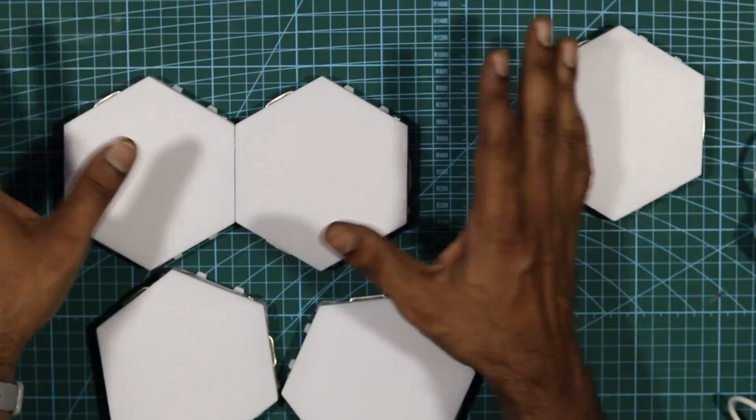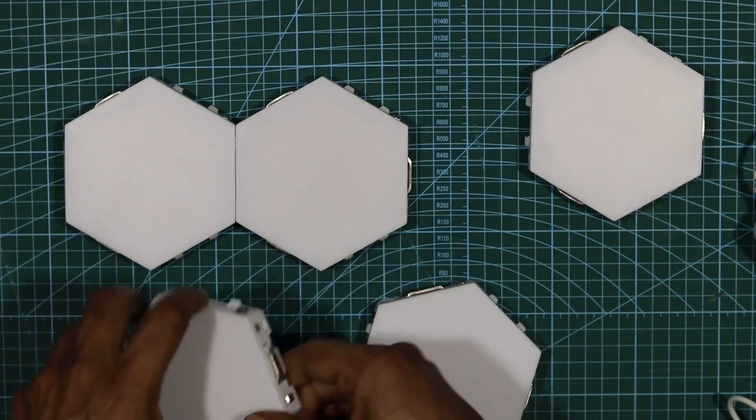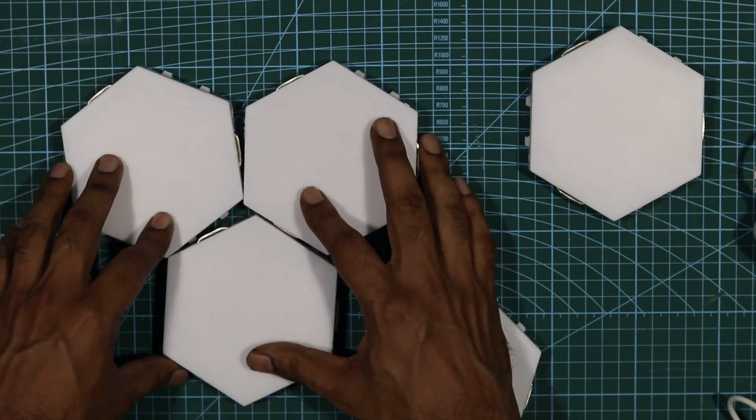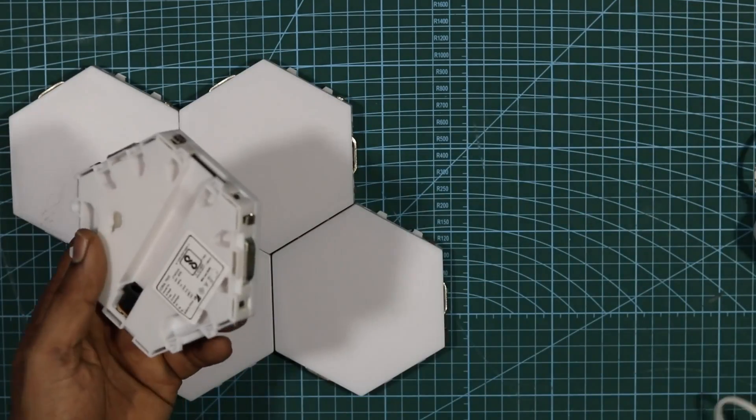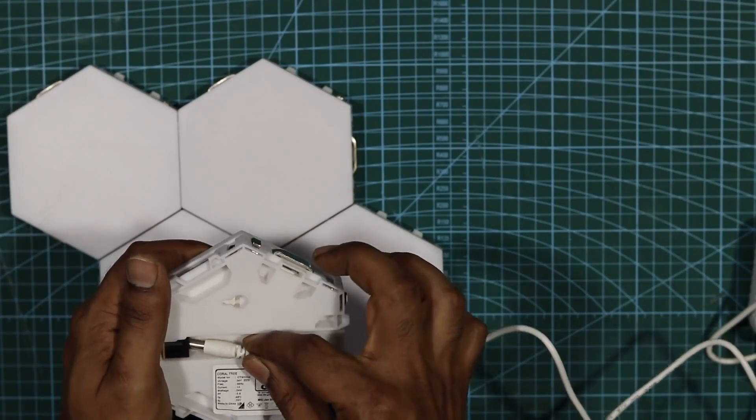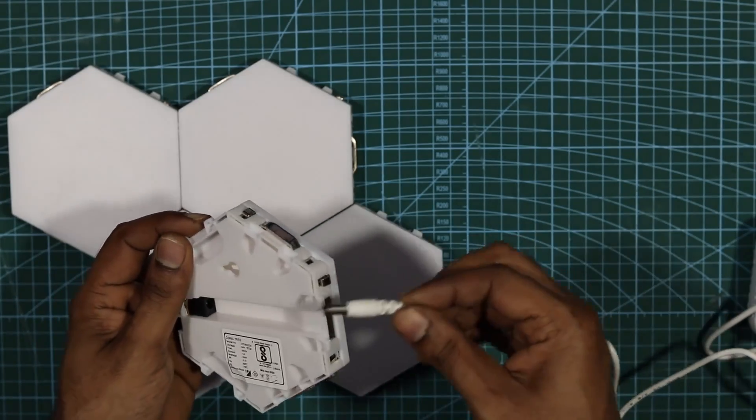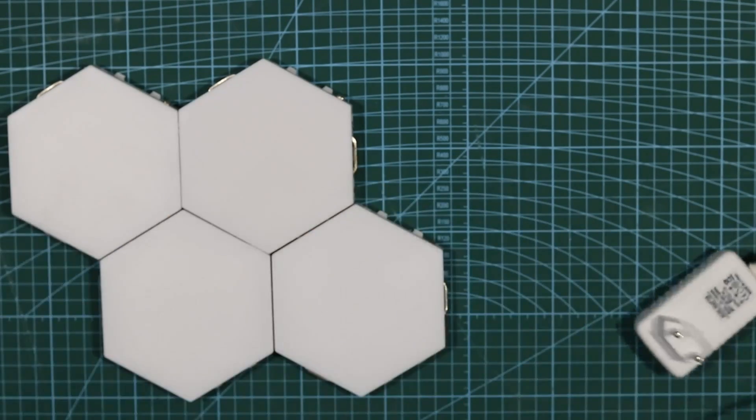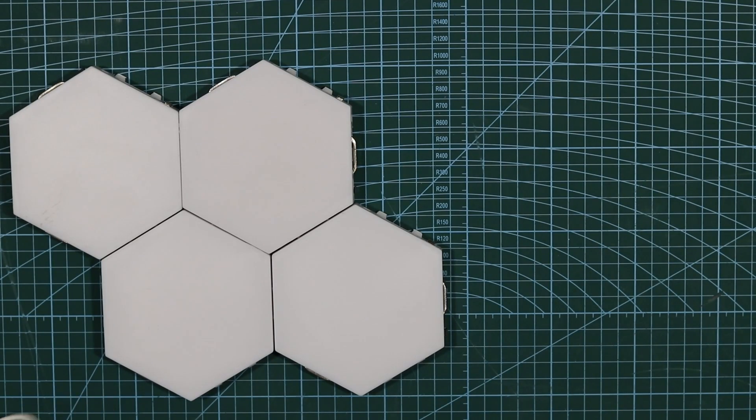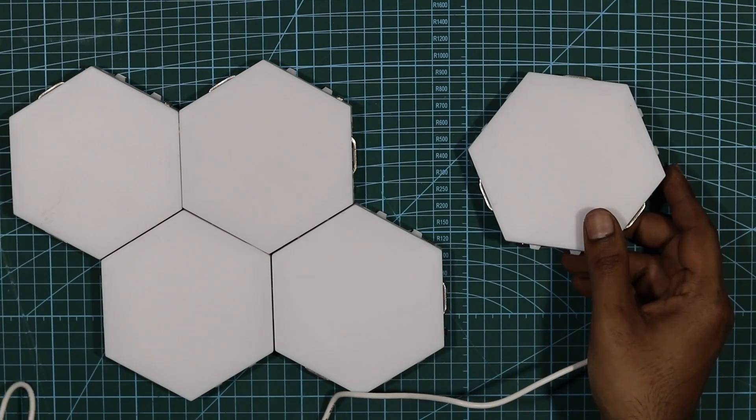And once you stick it on the wall, it's not going to move out anywhere. So let's quickly connect everything and let me power it on. Let me put the barrel jack in one of the module before we could power it on. And let's plug in the other end in the AC outlet.